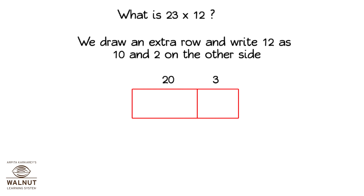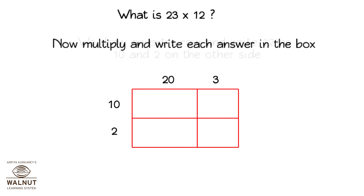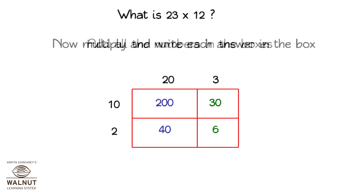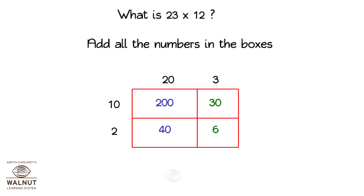We draw an extra row and write 12 as 10 and 2 on the other side. Now multiply and write each answer in the box. Add all the numbers in the boxes. 200 plus 30 plus 40 plus 6 is equal to 276.